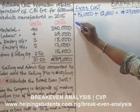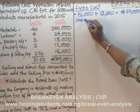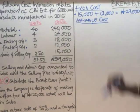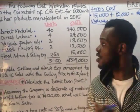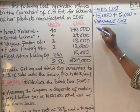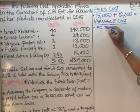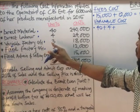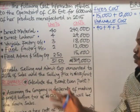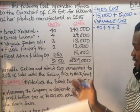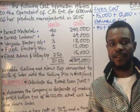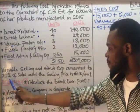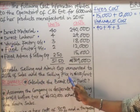Now, what about our variable costs? To get our variable costs, following the same steps, the direct material is a variable cost. So we have $40, plus direct labor $4, plus variable factory overhead $3. Also, from the additional information, variable selling and admin expenses amount to 20% of sales, and the selling price is $100.